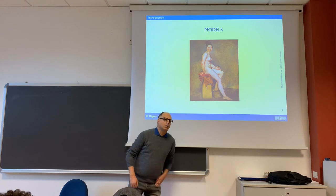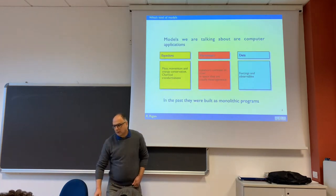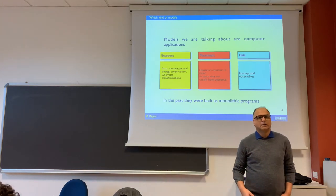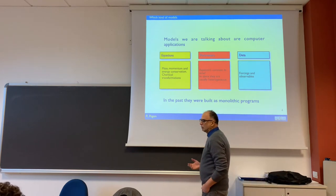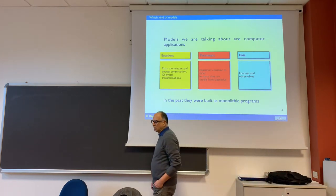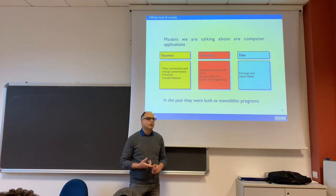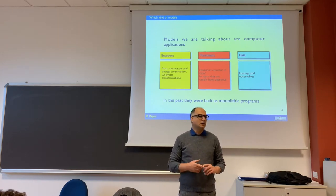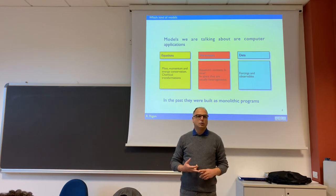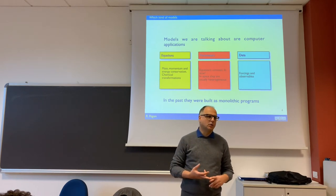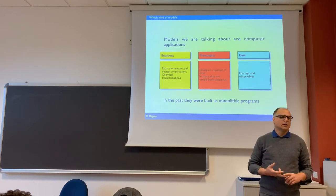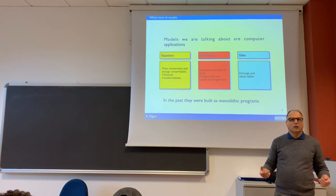What I mean by models: our models are numerical models that contain equations. Which equations? The mass budget. Hydrology is mainly the mass budget — the water budget on the soil surface that goes around. But also the energy budget. We will talk only partially of the energy budget, when we go to look at evapotranspiration, but the energy budget is a necessary component of the whole cycle.